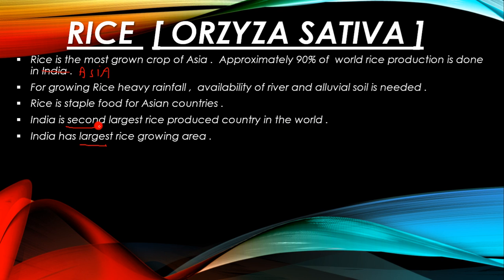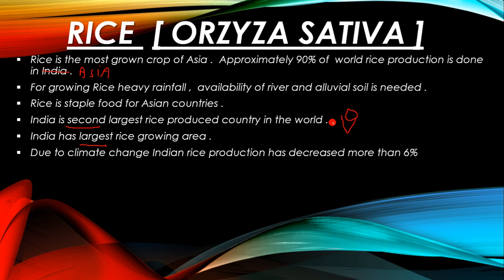India has the largest rice growing area but is only the second largest producer of rice. This is because, in comparison to China, the farming area in India is also used for growing wheat and other crops, so extensive farming is used. Due to climate change, Indian rice production has decreased by more than 6%, which is a huge loss. Rice mostly contains carbohydrates.